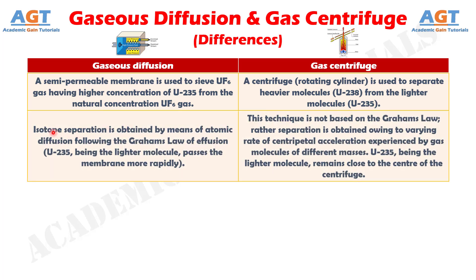Difference number 2. In the gaseous diffusion process, isotope separation is obtained by means of atomic diffusion following Graham's Law of Effusion. Uranium-235, being the lighter molecule, passes the membrane more rapidly. In the gas centrifuge technique, separation is not based on Graham's Law; rather, separation is obtained owing to varying rates of centripetal acceleration experienced by gas molecules of different masses. Uranium-235, being the lighter molecule, remains close to the center of the centrifuge.